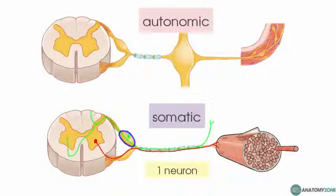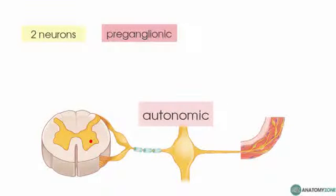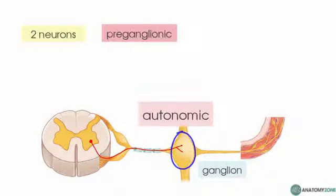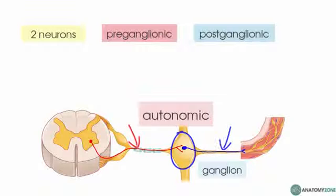The efferent component of the autonomic nervous system is different — there are two sets of neurons between the CNS and the PNS. We've got the pre-ganglionic neuron, which leaves via the ventral horn, exits along the ventral root, and forms a synapse in a ganglion — a collection of neuronal cell bodies outside the central nervous system. This pre-ganglionic neuron synapses onto the post-ganglionic neuron, which then innervates the target organ, in this case the smooth muscle wall of a blood vessel.